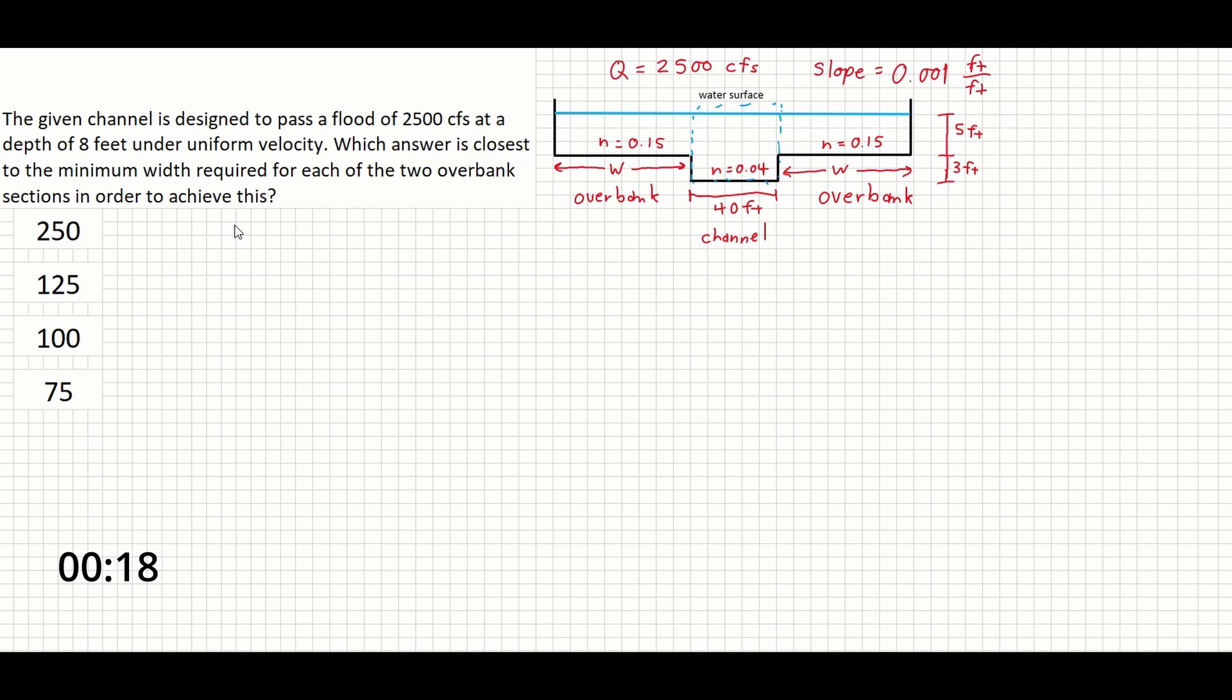So what we've got here is a channel with a depth of 3 feet plus 5 feet is our 8 feet over here. And the whole channel plus the overbank group of sections together is meant to pass a flow of 2,500 CFS. The slope is going to be 0.01 and we have different Manning's n values for the overbanks versus the channel.